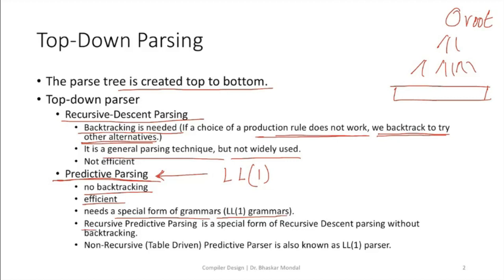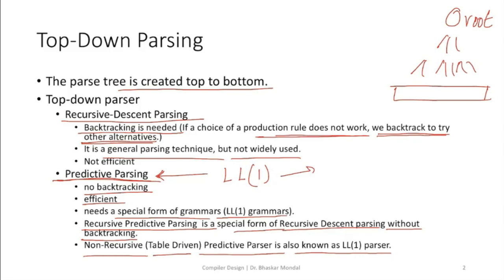Recursive predictive parsing is a special form of recursive descent parsing without backtracking. Non-recursive or table-driven predictive parsing is also known as LL(1). In LL(1), you can have recursive parsing or non-recursive parsing. In the case of non-recursive parsing, you can have table-driven parsing, where the prediction is done using a table.